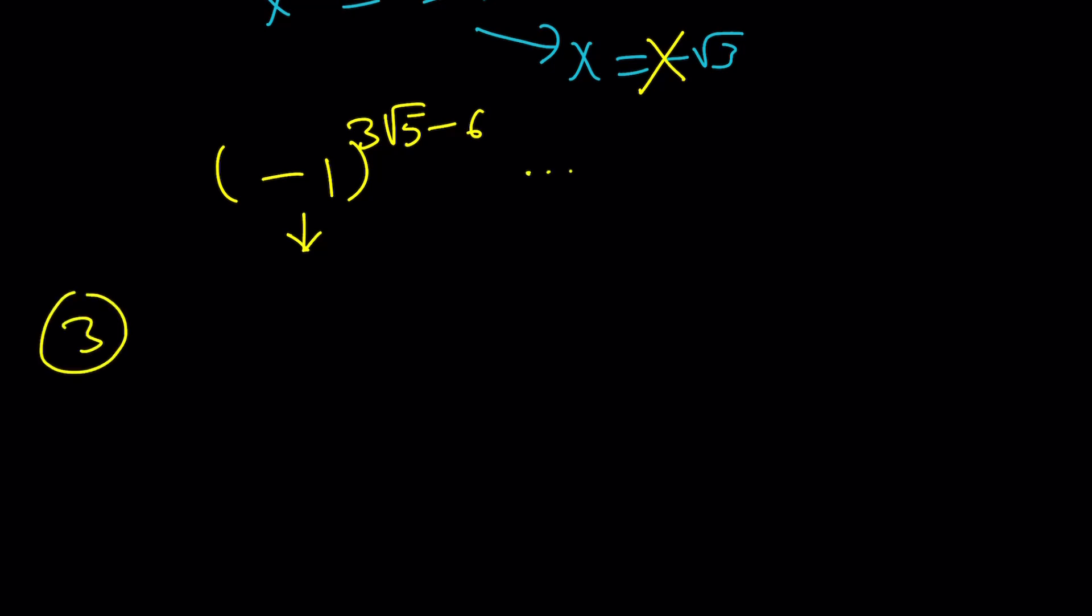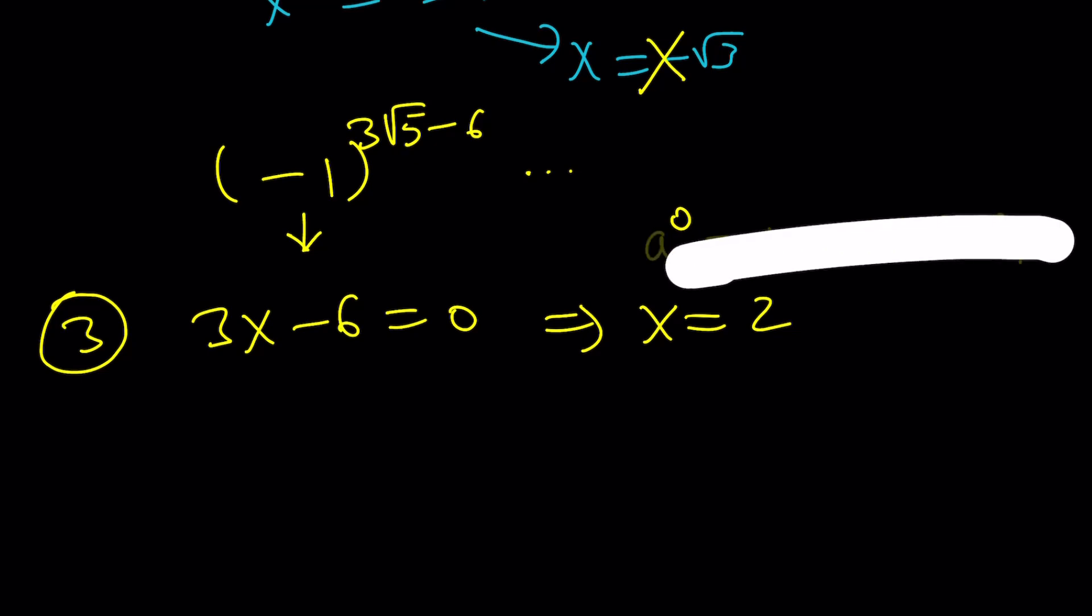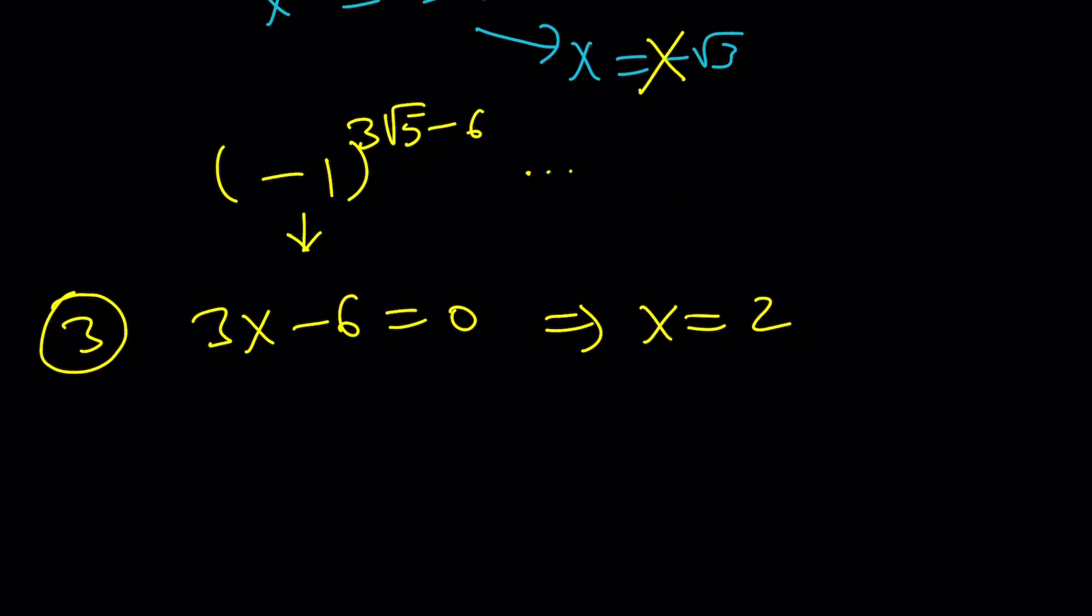Let's talk about the third case. The third case is the exponent being 0, because a to the power of 0 is 1. And I know some people say that this is only true if a does not equal 0. People say that because they think 0 to the power of 0 does not equal 1. But do you think the same way? Here's the thing. If x is equal to 2, I'm going to plug it in.